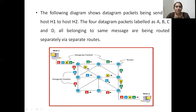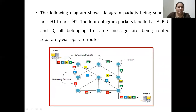This diagram shows how datagram packets are routed between one host and another on a datagram network. Assume host one is sending a message divided into four packets: A, B, C, and D. You can observe that each datagram packet takes a different route to reach host two, the destination. Packet A follows a different path, B follows a different path, C follows a different path, and D follows a different path.